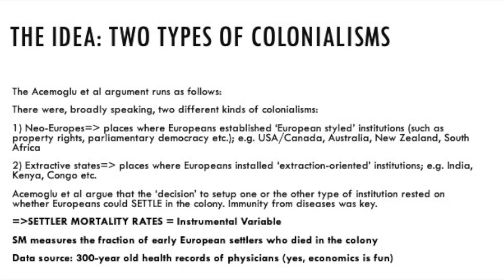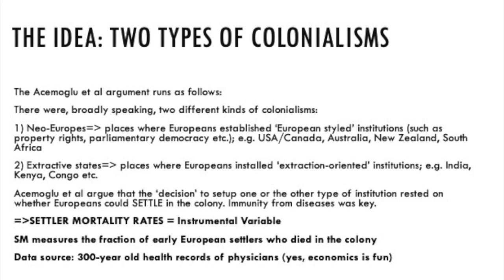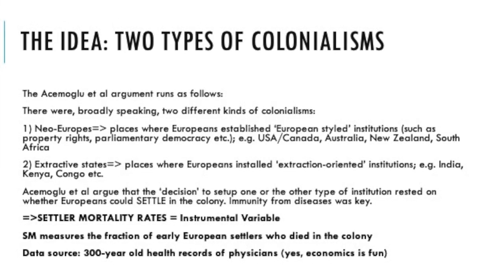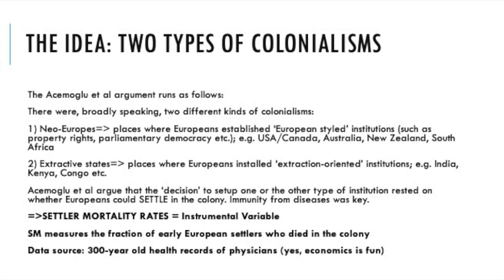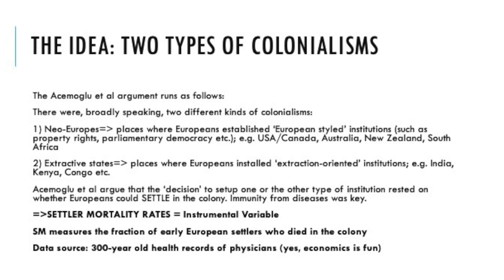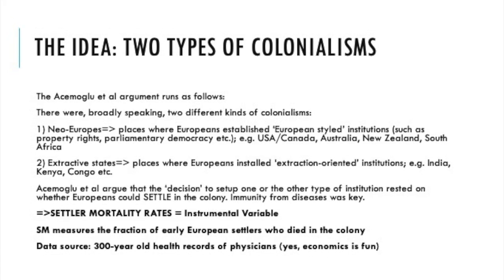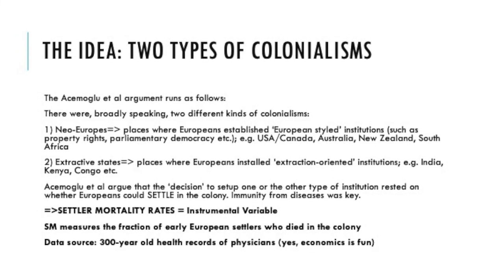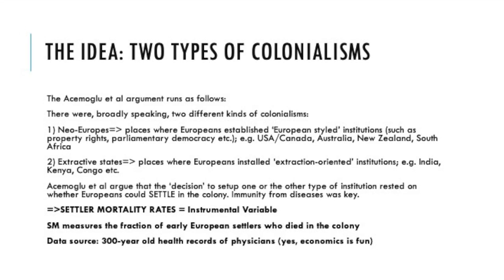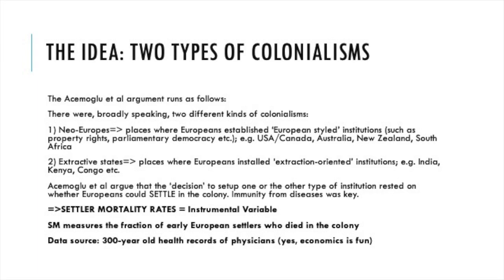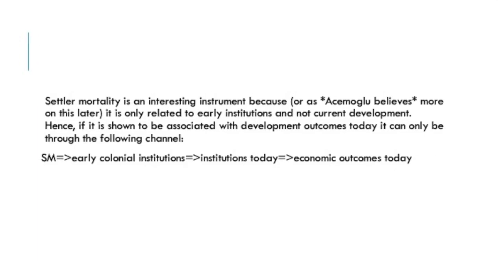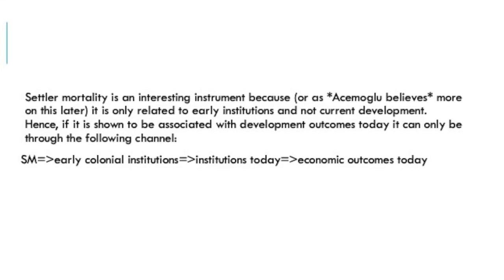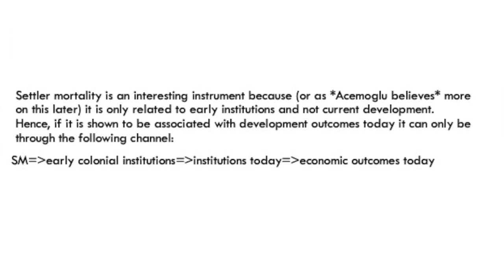His argument works in four steps. Step one: broadly speaking, Acemoglu argues there were two kinds of colonialisms — settler colonies, i.e. places where Europeans settled, versus extractive colonies, i.e. where Europeans couldn't settle. In places where Europeans could settle, they created European-styled, or what Acemoglu calls neo-European institutions, such as in North America, Australia, New Zealand, etc. In other places — which is basically most places — they created extractive institutions. So institutions created over 200 years ago evolved into current institutions, and hence, via their impact on institutional history, affect comparative economic outcomes today.